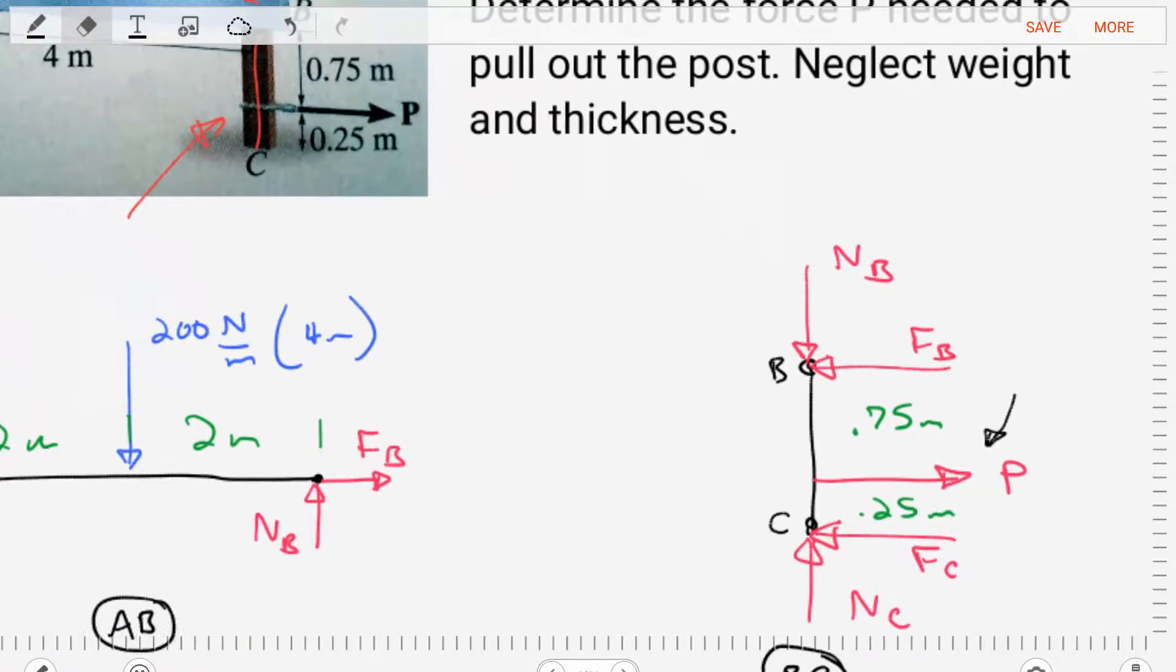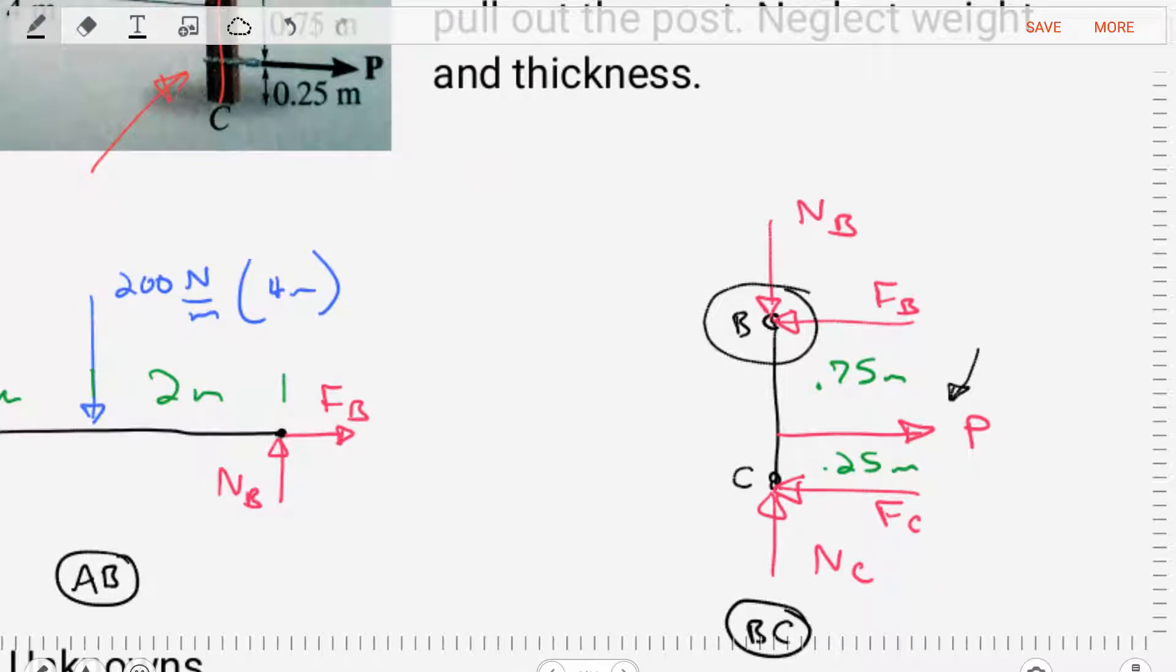If we go to our diagram, the support at C and the supports at B with the reactions. At B, we should have equal and opposite reactions to our previous diagram. In the previous diagram, the normal force NB is going up. In this one, it's going down, so that if we were to put these diagrams back together, those internal forces would disappear. NB is equal and opposite. FB is also equal and opposite. Now let's analyze point C. At point C, there's the floor, which creates a normal force NC. And then there's also friction between the floor and the post, which is FC.